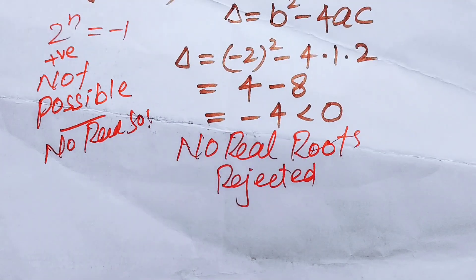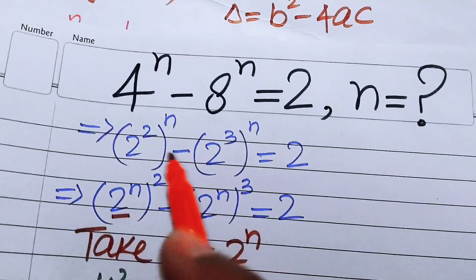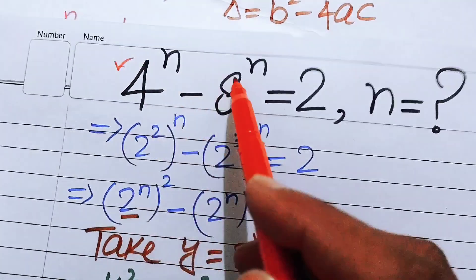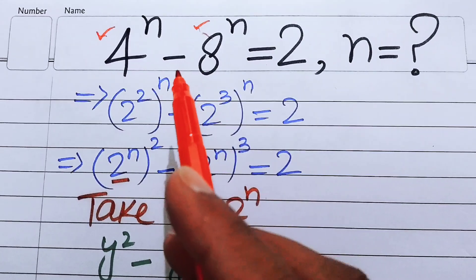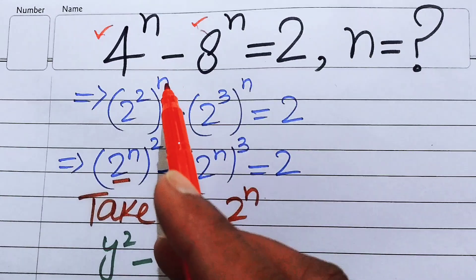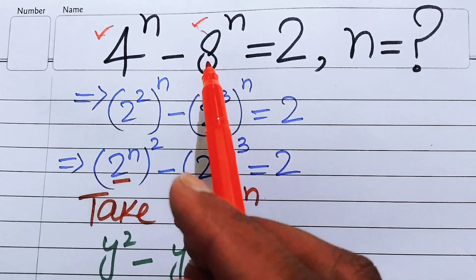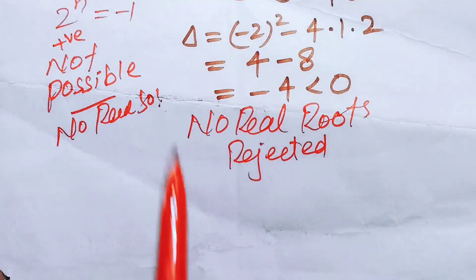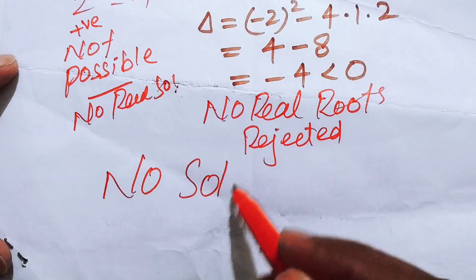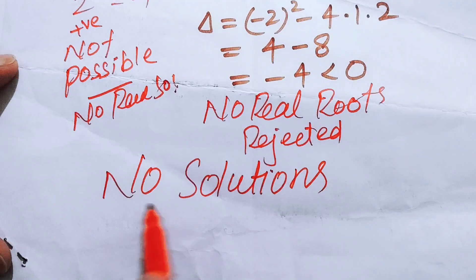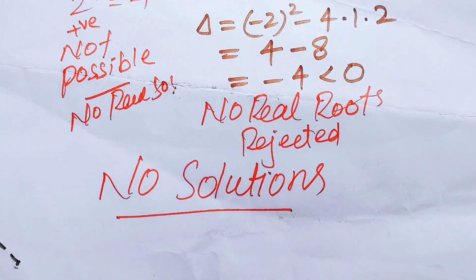Finally, we conclude that since this is an exponential function, we cannot accept imaginary or complex values. Both cases fail to provide a real solution, so the equation 4 to the power of n minus 8 to the power of n equals 2 has no solution. Thank you so much for watching this video. Please subscribe to my channel for more exciting videos.